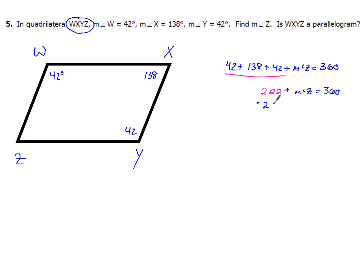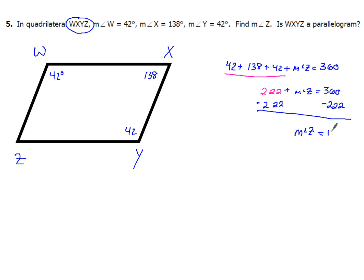Subtracting 222 from both sides, you should be at a level of algebra where you can go right to the result: the measure of angle Z equals 138.